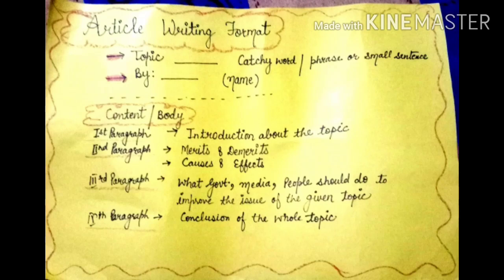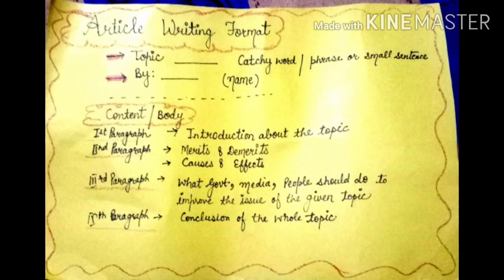In the second paragraph, you can write merits and demerits — include both in detail. For other topics, you can use causes and effects. So the second paragraph is typically indicated by merits and demerits, or causes and effects, depending on the topic. This is how you will usually handle most article-writing titles.